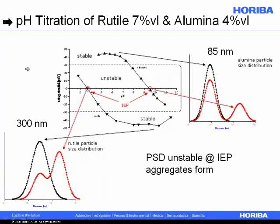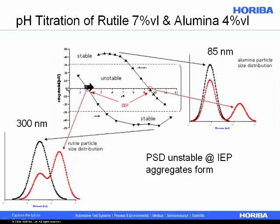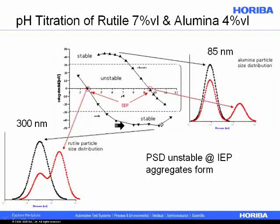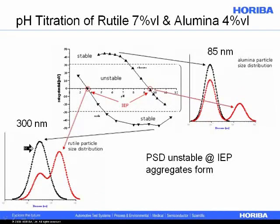Let's say we were making titanium dioxide to go into a sunscreen product. On this graph, the x-axis shows pH going from 2 up to 12, and the y-axis shows zeta potential, from negative to positive. The lower plot shows zeta potential as a function of pH for rutile — one of the forms of titanium dioxide. If we raise the pH from 7 up through 11, we have a zeta potential near minus 40-something, and that predicts a stable suspension. If we measure the particle size of this titanium dioxide at pH near 9, we have a nice single peak near 300 nanometers.